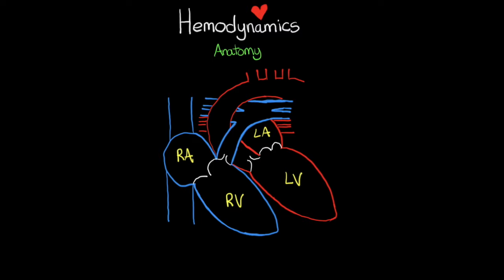Blood flows from the right atrium to the right ventricle, then to the lungs, returns to the left atrium, feeds into the left ventricle, and finally the left ventricle pumps blood throughout the rest of the body. As blood passes between chambers, it passes through different heart valves. These valves are important because insufficiencies or problems with them will impact blood flow and ultimately our hemodynamics. The first valve is the tricuspid, located between the right atrium and right ventricle.